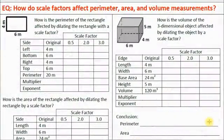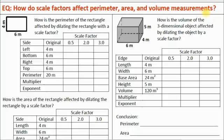This video will fill out the bottom section, the bottom flap of section number three in your unit 10 volume flip book. This is a very important section for you to understand. I hope you spend the time to listen to the audio as I step through the different parts. The essential question is: how do scale factors affect perimeter, area, and volume measurements?